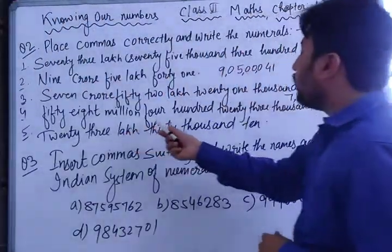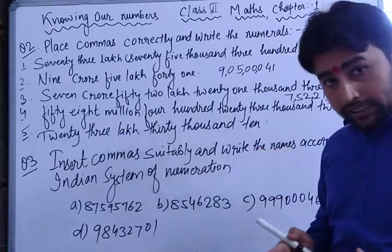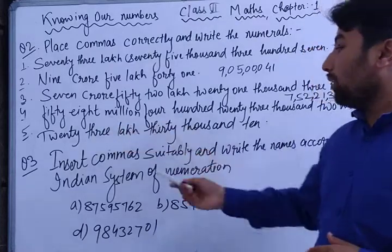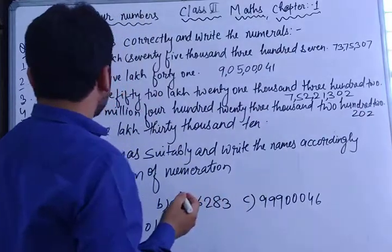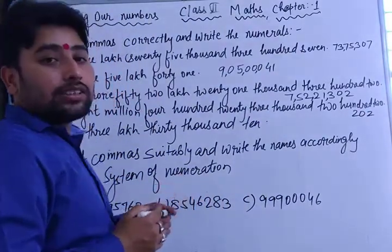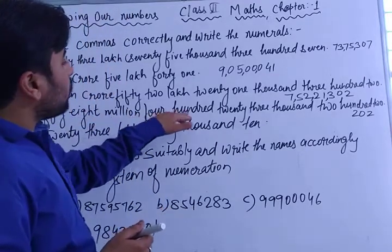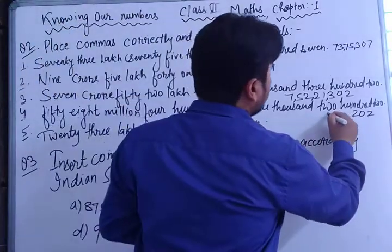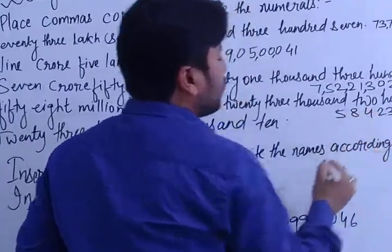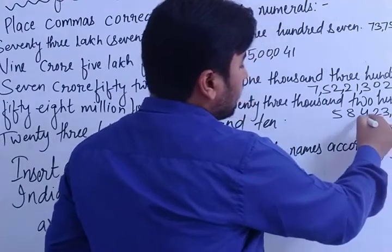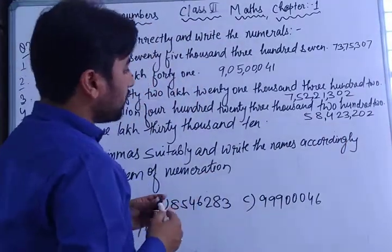The next part is fifty-eight million four hundred and twenty-three thousand two hundred and two. This is in the international system, as it uses millions. First write two hundred and two, then four hundred twenty-three thousand. In the international system, commas are placed after every three digits from the right — units, tens, hundreds, thousands, ten thousands, hundred thousands, millions. So: 58,423,202.